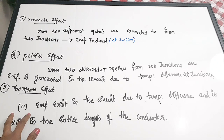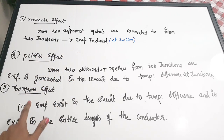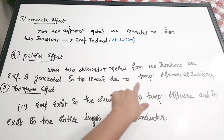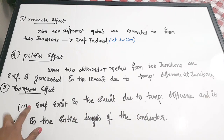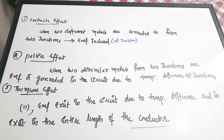The third is Thomson's effect. The beginning is the same — when two dissimilar metals form a junction, EMF is generated due to temperature difference. In addition, Thomson's effect explains that EMF exists in the circuit due to the temperature difference and it exists in the entire length of the conductor. The base of all three effects is the same; only the level of detail differs. These three effects — Seebeck, Peltier, and Thomson's — together explain how a thermocouple works.